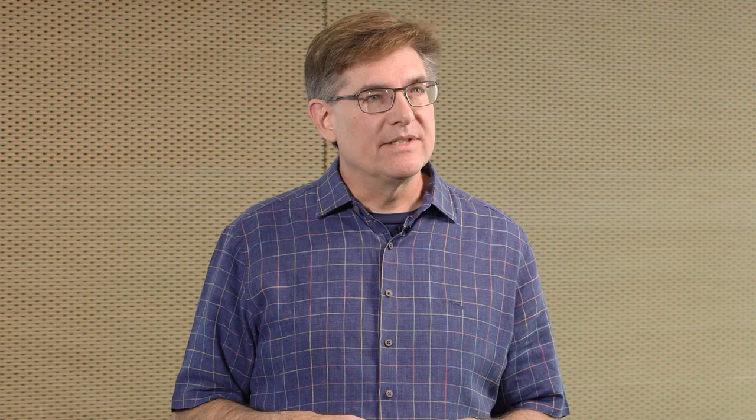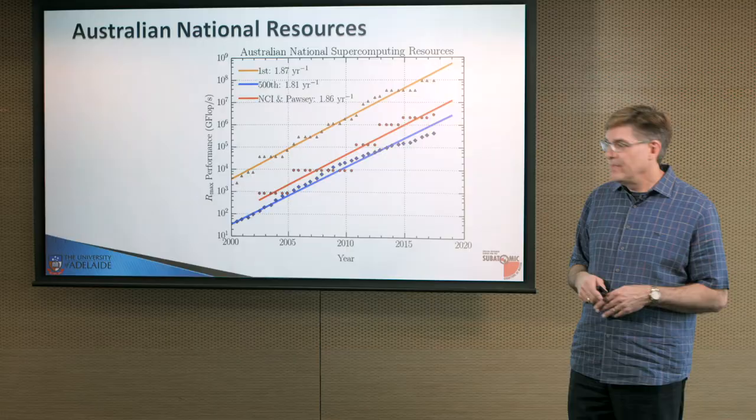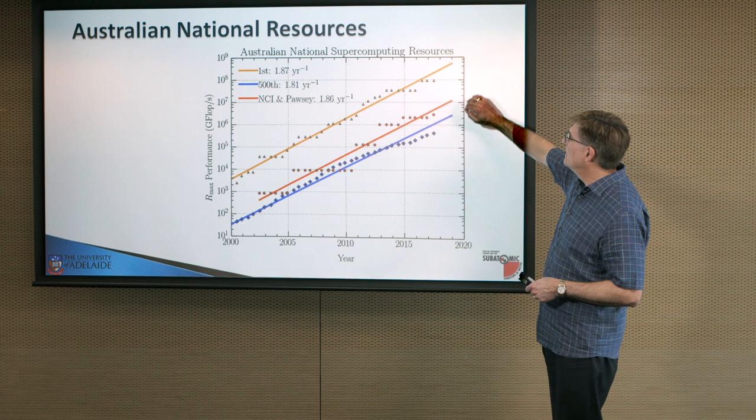Here's how these Australian national resources sit into the top 500. Again, we've got the 500th here in blue. We've got the number 1 in the list in yellow. And the orange takes care of the Australian supercomputers.